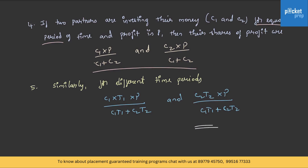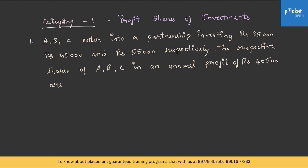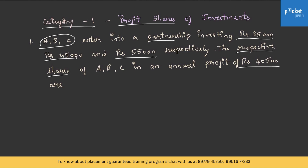Let us try to solve the problem. Category 1: A, B, C enter into a partnership investing Rs. 35,000, Rs. 45,000 and Rs. 55,000 respectively. The respective shares of A, B, C in an annual profit of Rs. 40,500 are to be found. Three investors are investing some amount and the annual profit is given; we need to find the respective shares.